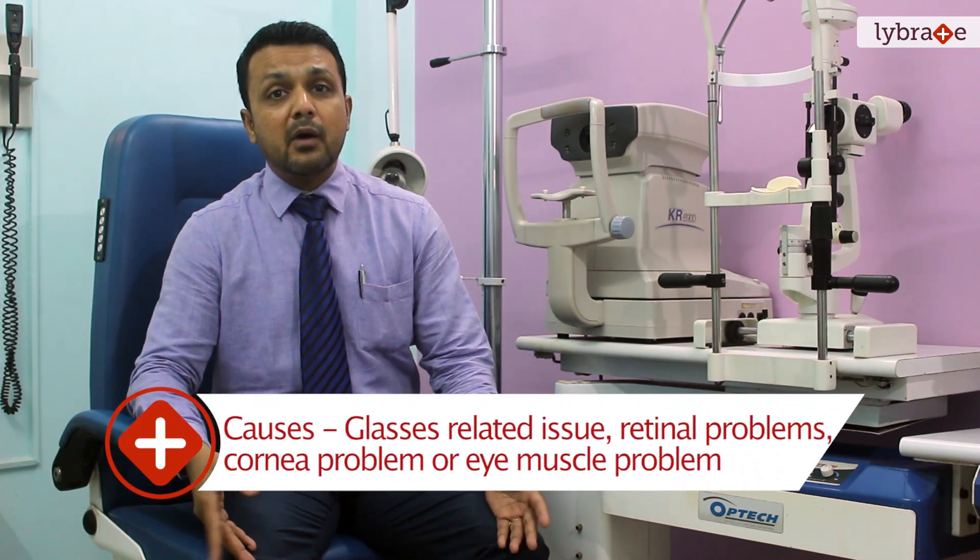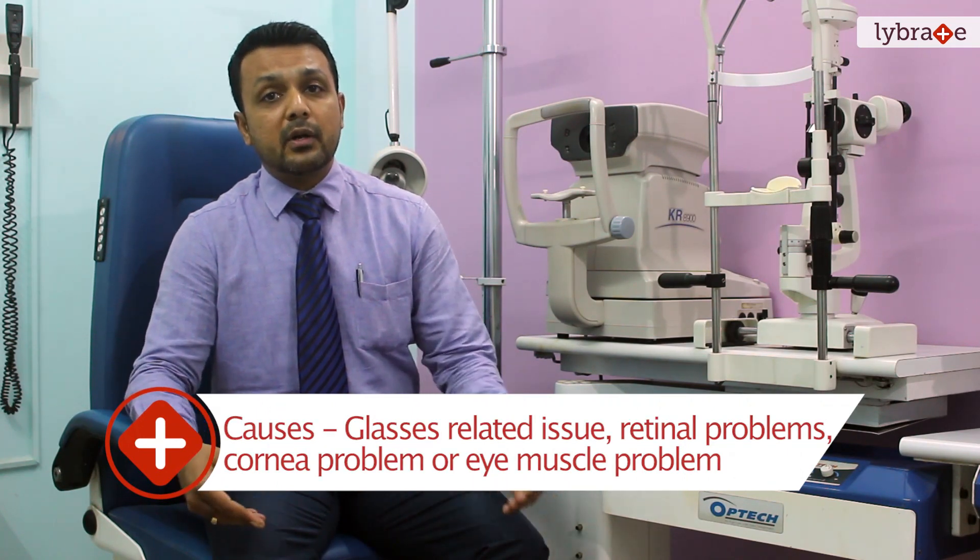Squinting is a problem which is very common and is a taboo for children who go to school, as people call them by various names. Any child who is about to go to school and has a cosmetic problem needs correction. To correct squinting, we first need to know the cause — whether it is because of glass power, a retinal problem, a corneal problem, or just an eye muscle problem.